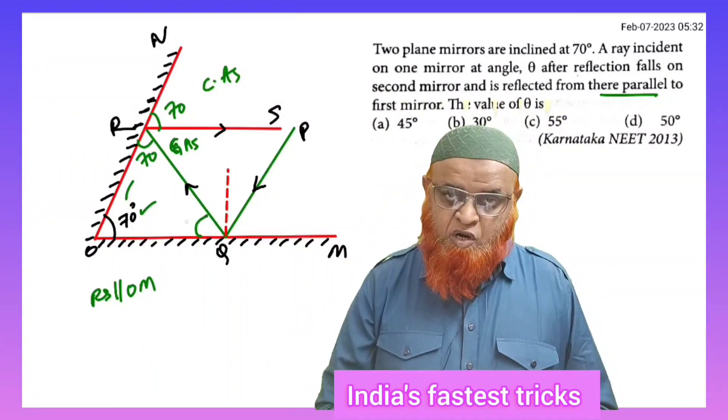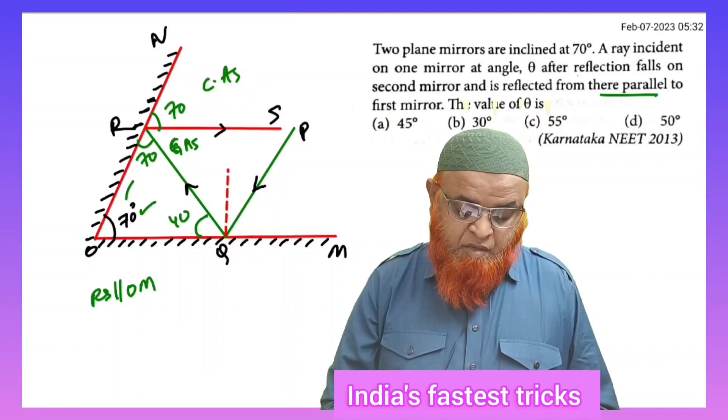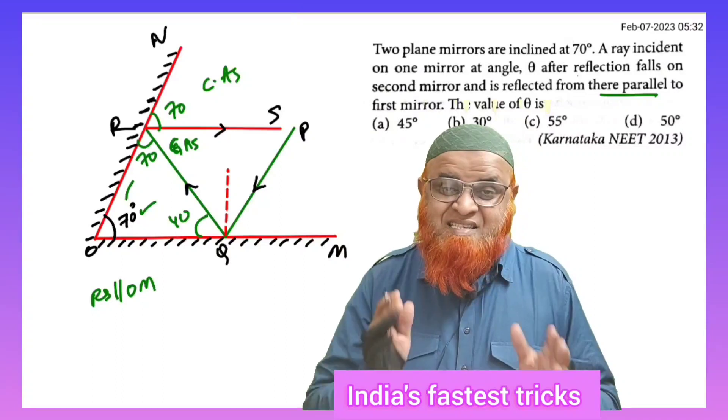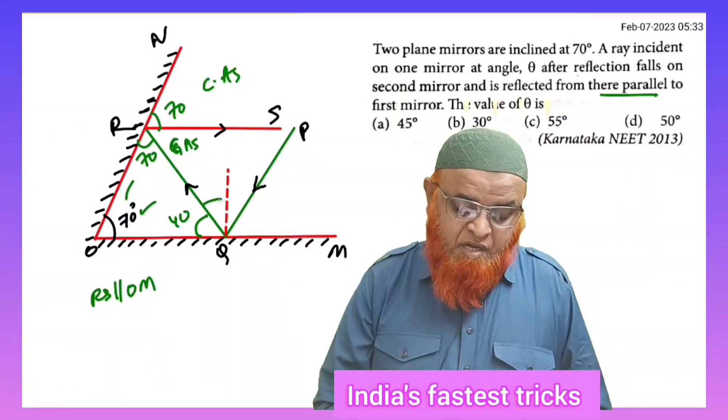So 70, 70, 140 means this is going to be 40 because of angle sum property. Sum of the angles in a triangle is nothing but 180. So this is going to be 40.